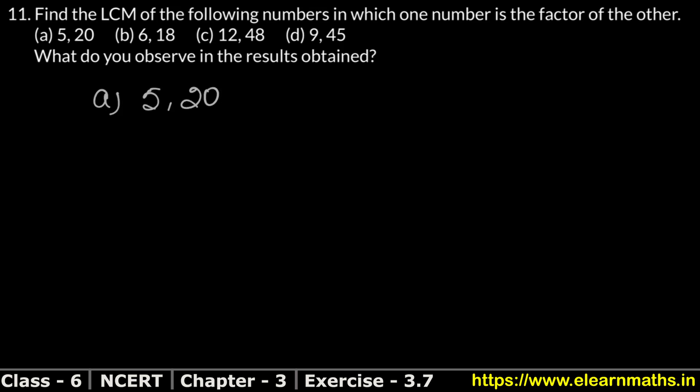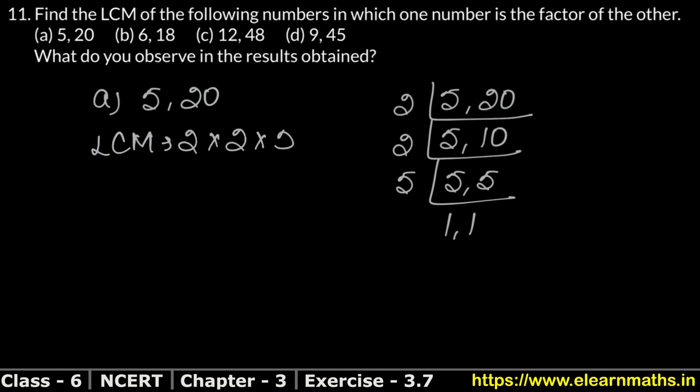First part let's write. First part is 5 and 20. So let's find LCM of 5 and 20 together. See, 2 divides, 5 as it is, 2 ones are 2 and 0. Again 2, 5 as it is, 2 fives are 10. Now 5, one's are 5. So LCM of both numbers, 5 and 20, that is 2 into 2 into 5. So what did this become? 20 became ours.